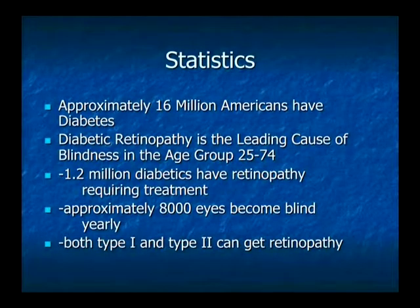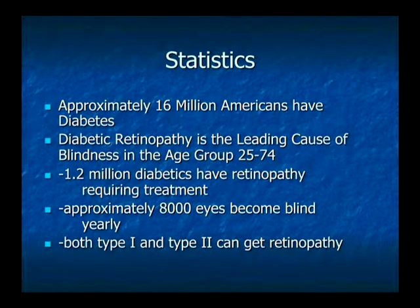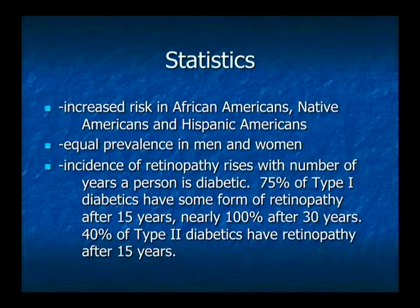Some statistics about diabetes: there are approximately 16 million Americans who have diabetes, and unfortunately that number keeps going up. Diabetic retinopathy is the leading cause of blindness in the age group 25 to 74. There are approximately 1.2 million diabetics who have retinopathy that requires treatment, and approximately 8,000 eyes become blind per year due to diabetic retinopathy. Both type 1 and type 2 diabetics can get it. There is an increased risk for African Americans, Native Americans, and Hispanic Americans, with equal prevalence between men and women.